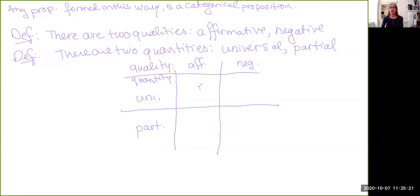Now, an A claim, X belongs to every Y, is universal because it's talking about everything, and it's affirmative. It's saying that something does hold. On the other hand, the E claim, X belongs to no Y, is universal and negative. So it's saying something about all of the Ys, and it's saying that something does not hold with them.